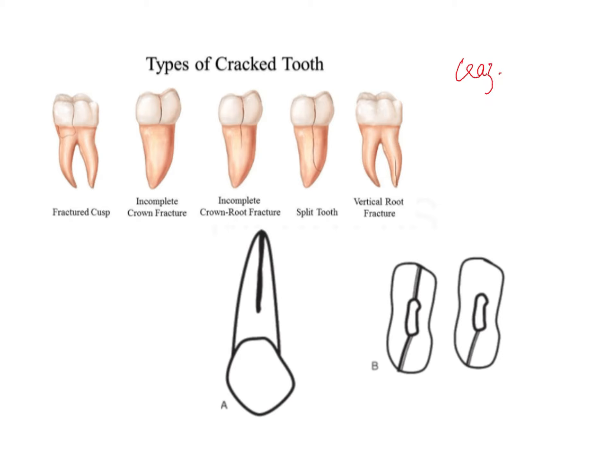Craze lines are fracture lines present only in the enamel of the crown. They are not involved in anything deeper — just confined to the enamel. They can be due to excessive masticatory forces or any other trauma, such as eating something hard.